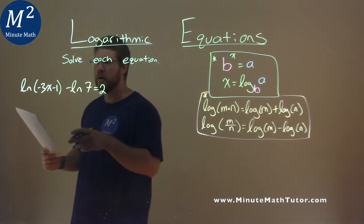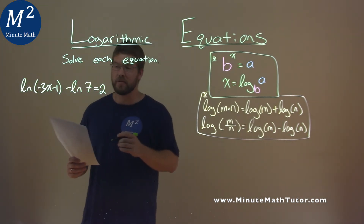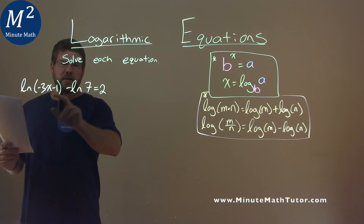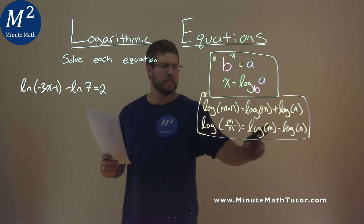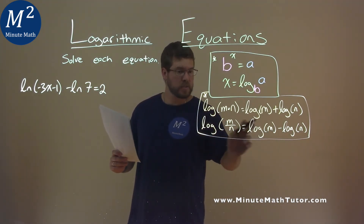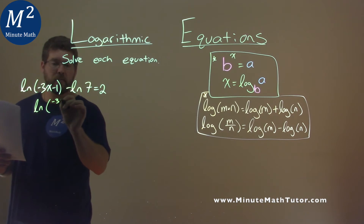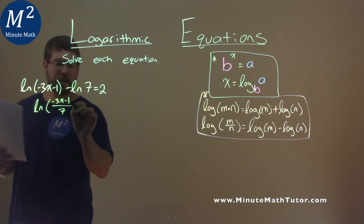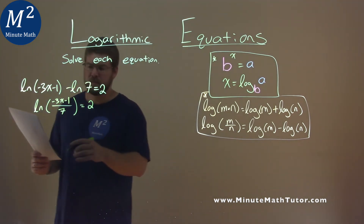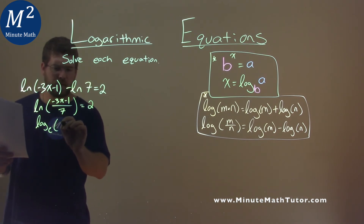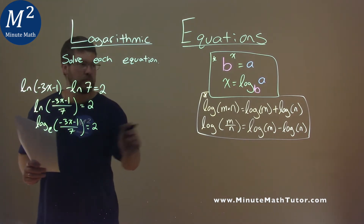We're given this problem: the natural log of negative 3x minus 1 minus the natural log of 7 equals 2, and we need to solve this equation. Natural log is log base e, and we have the same base here. So we can use our formula — log of m minus log of n combines to one logarithm where we divide the insides. So we get natural log of negative 3x minus 1 over 7, equal to 2.